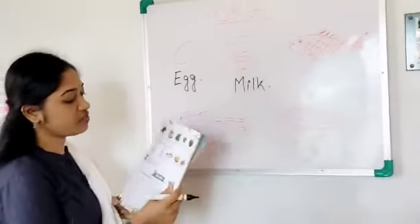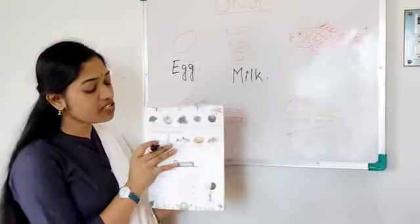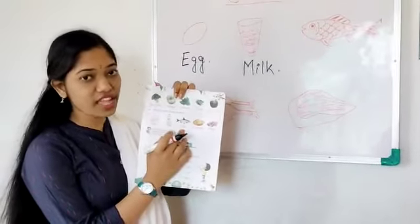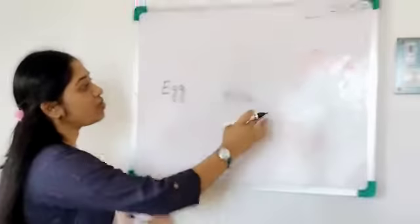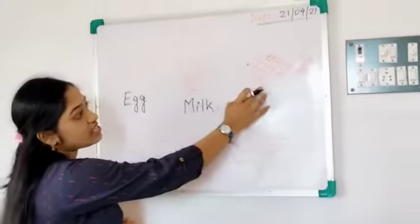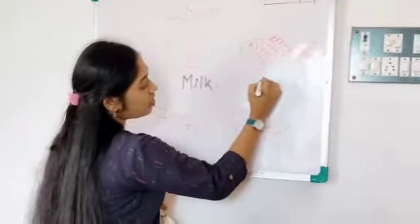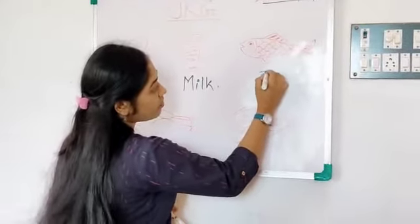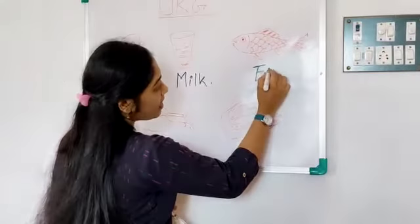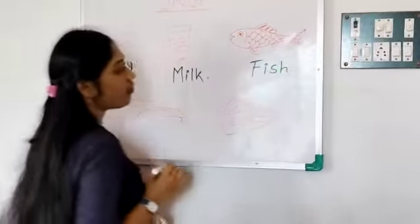What is the next food? See, first look at your food. This is fish. Very good. Now, look at the board. This is fish. Now, the spelling of fish. F-I-S-H. Fish.